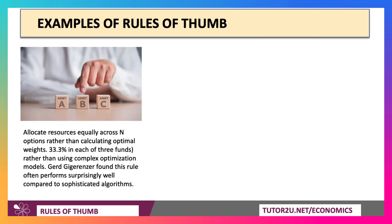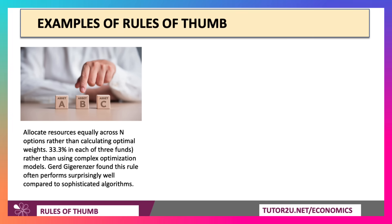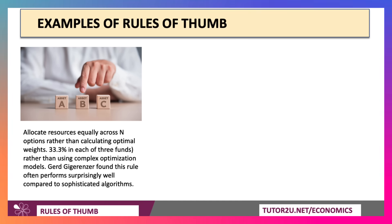Three examples of rules of thumb. One is investment decisions. You could spend all your life trying to optimise your allocation of financial capital. Well, one rule of thumb — say you've got £100,000 or £300,000 to invest —